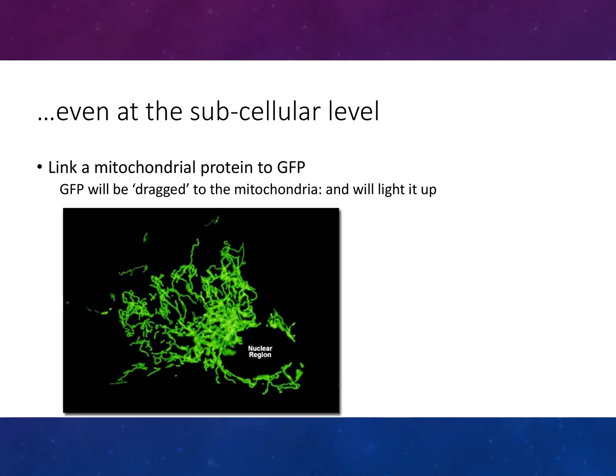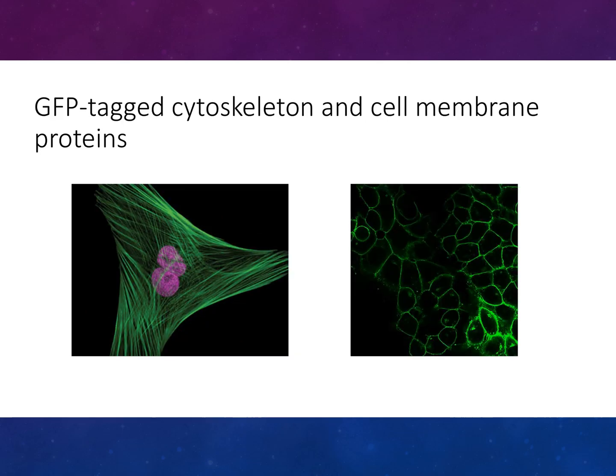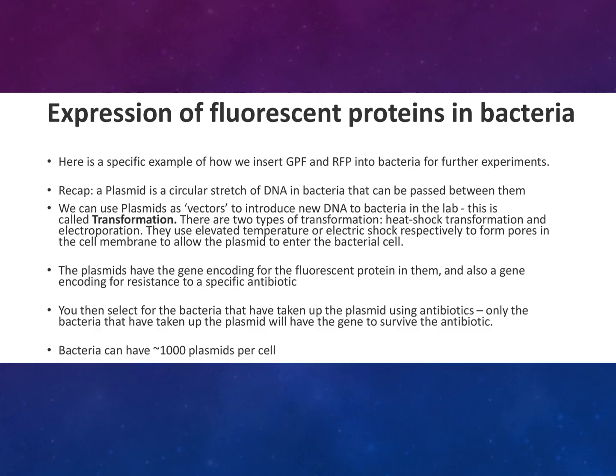For example, you can link a mitochondrial protein to GFP, and the GFP will localise to the mitochondria and light it up. GFP can also be tagged to cell membrane proteins, as you can see here.